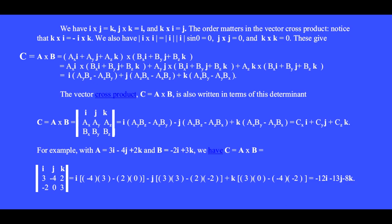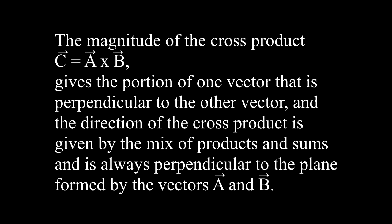In the determinant, notice that we do plus I, minus J, and then plus K. The magnitude of the cross product C equals A cross B gives the portion of one vector that is perpendicular to the other, and the direction of the cross product is given by the mix of products and sums, and is always perpendicular to the plane formed by vectors A and B.